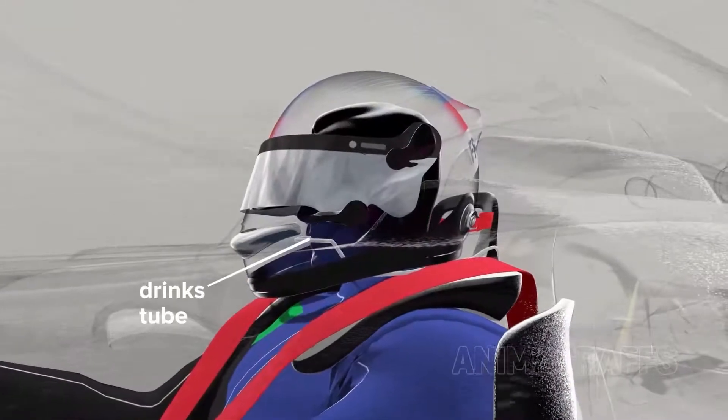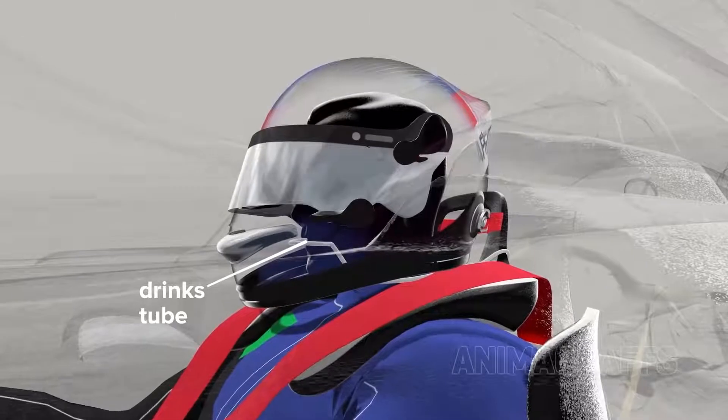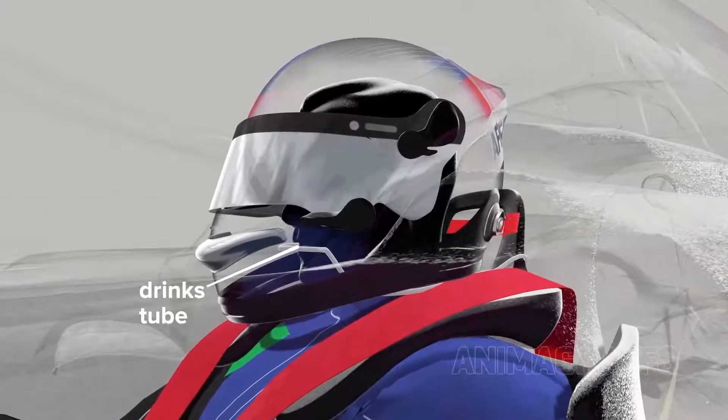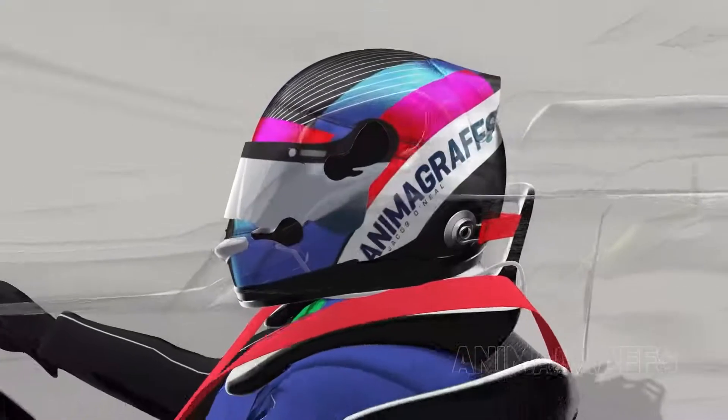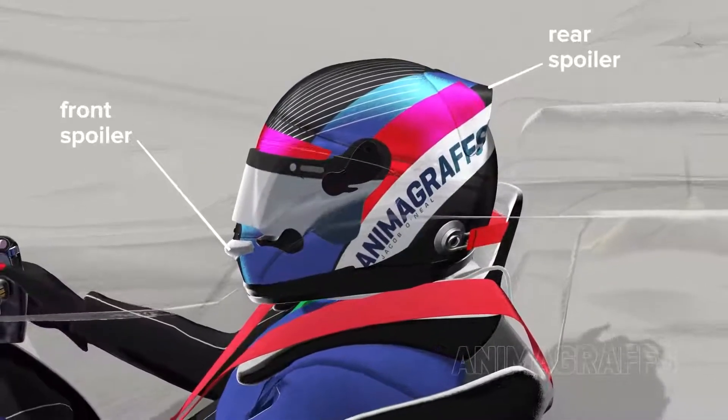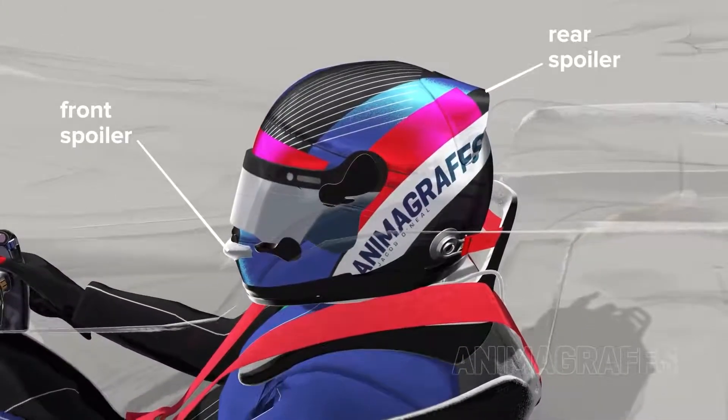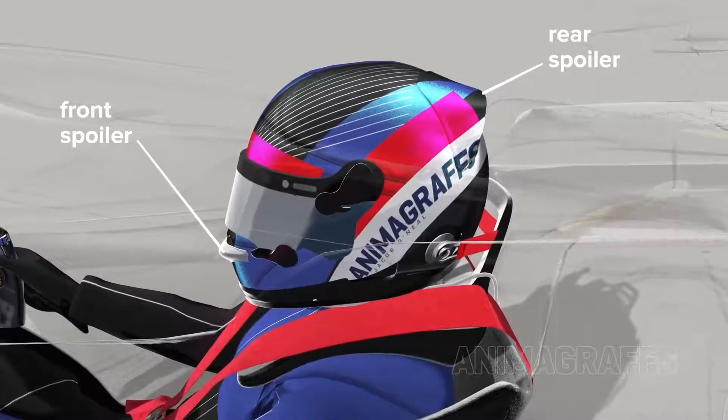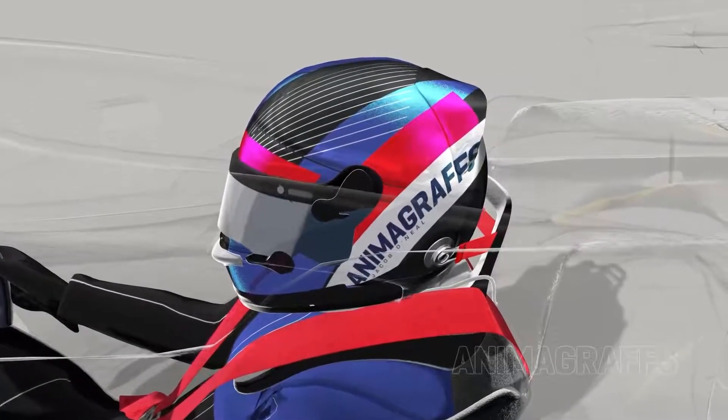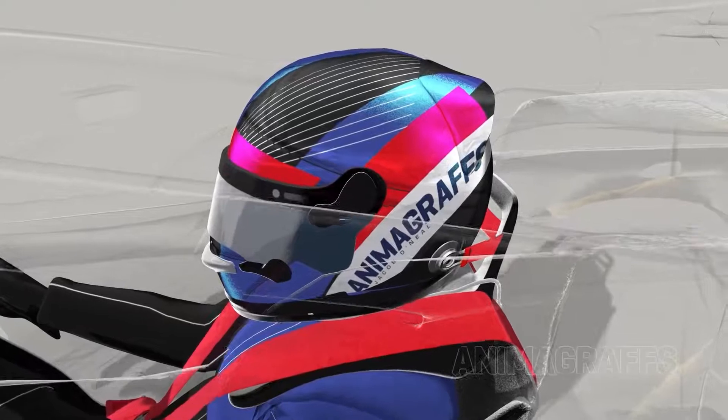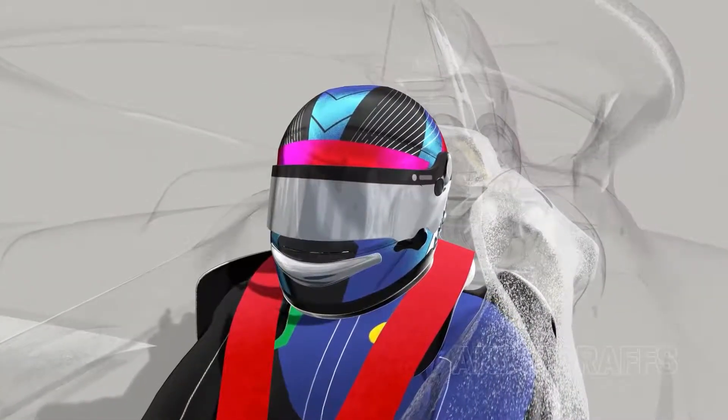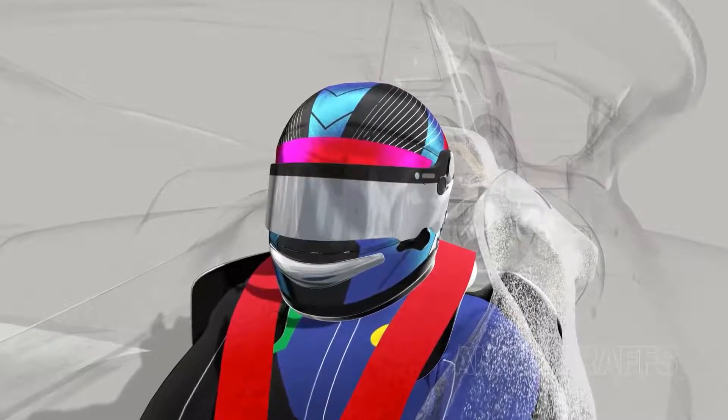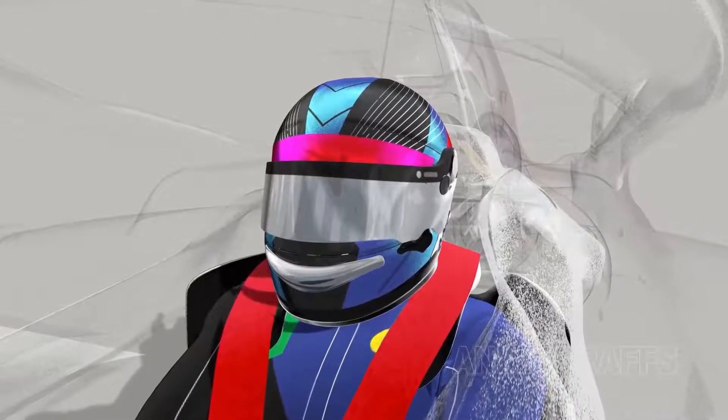A drinks tube extends over the shoulder, connected to a small fluid reservoir to keep drivers hydrated while racing. Drivers use different helmet front and rear spoiler designs to keep their helmets from lifting or moving around with sometimes dramatically shifting air pressures. In recent years, the visor opening has further narrowed to protect the more fragile visor area from puncture or breakage.